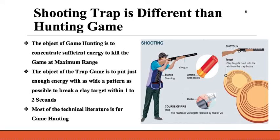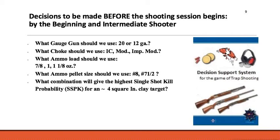We started with research into shotguns and found that most of the literature pertains to hunting, where you're trying to get a lot of energy into a large target far away. In trap shooting, you're trying to get just enough energy into a small target at close range, so most of the literature isn't very useful for comparing equipment. We want to determine what gauge to use — a 20 or a 12 — what choke, such as improved cylinder, modified, or improved modified, what ammo load of 7/8, 1, or 1-1/8 ounce, what pellet size of number 8 or number 7.5, and what combination gives the best single-shot probability of kill with the largest radius.